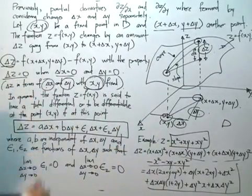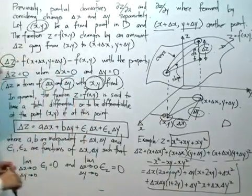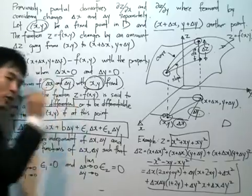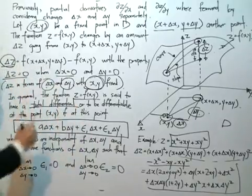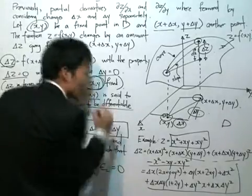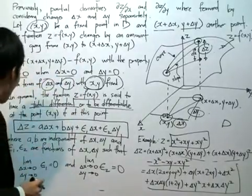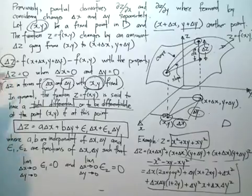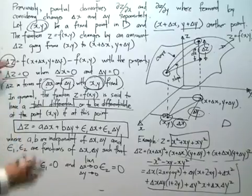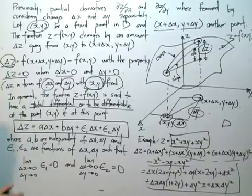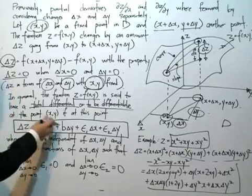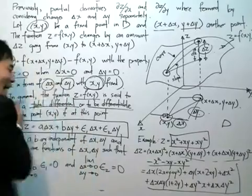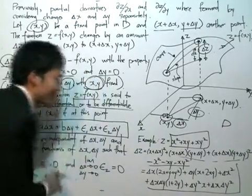In general, the function z = f(x, y) is said to have a total differential — or to be differentiable — at the point (x, y) if, at this point, delta z equals a·Δx + b·Δy + ε₁·Δx + ε₂·Δy, where a and b are independent of delta x and delta y, and epsilon 1 and epsilon 2 are functions of delta x and delta y.